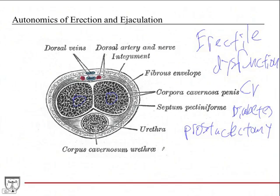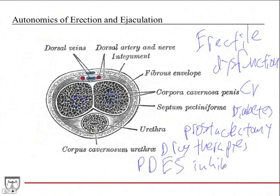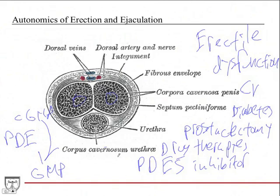And so the other thing is you'll see these on TV commercials all the time, the advertisements for the drug therapies for this. And so these drug therapies, what they do is they're phosphodiesterase five inhibitors. Now, what does that mean? So phosphodiesterase is an enzyme that catalyzes the breakdown of cyclic GMP into just GMP.